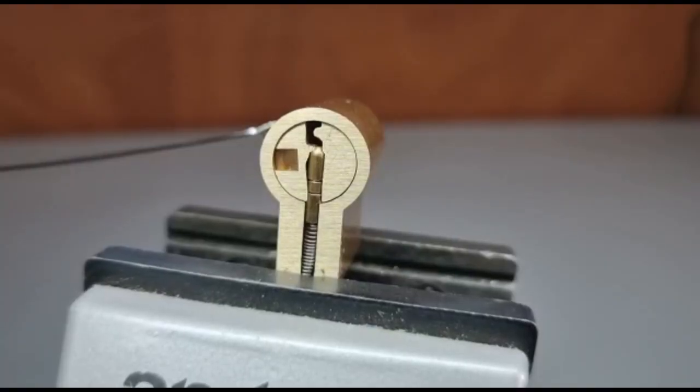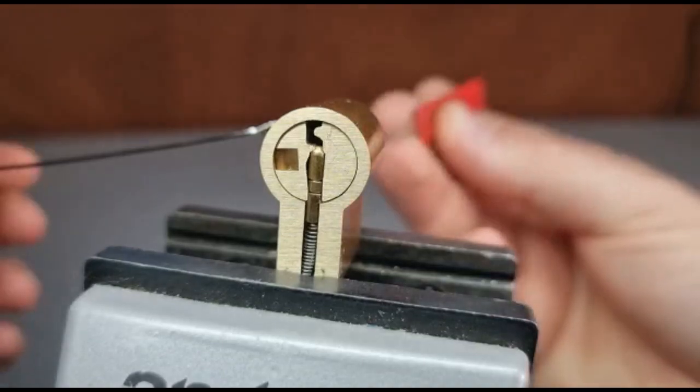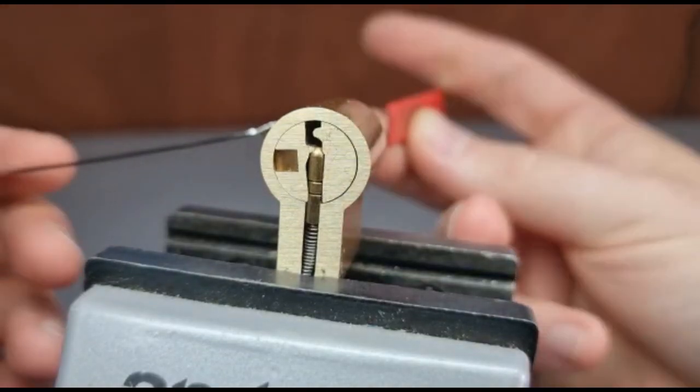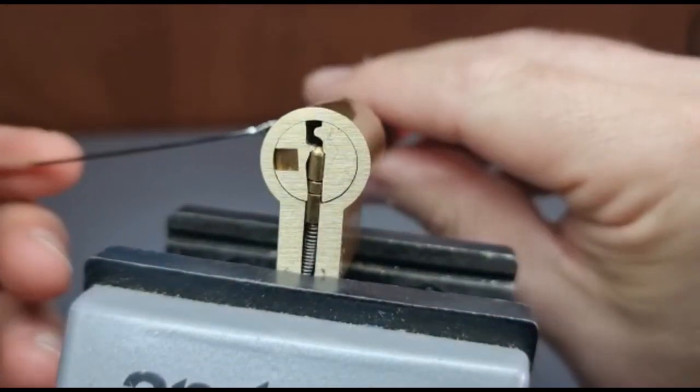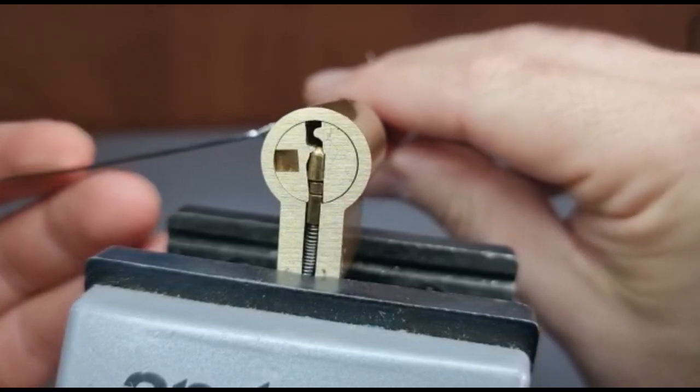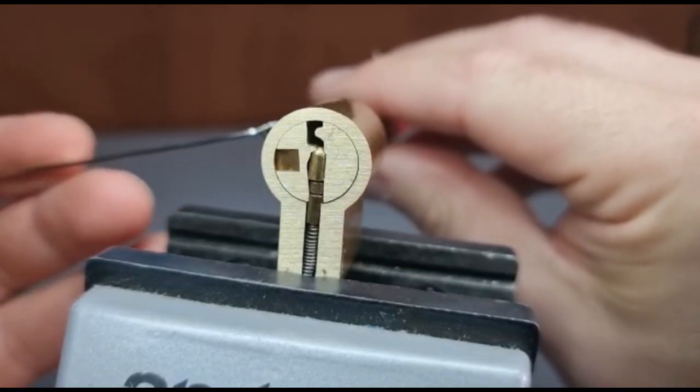So here you can see the three pins and the spring in a cross section of a Euro cylinder. There's the key pin. That's the key pin. And you can see that weird little one underneath it. That's because it's been master keyed. That's what allows you to have a master key.